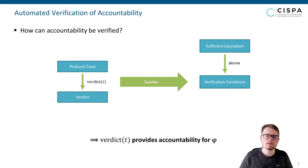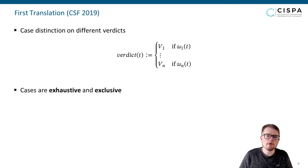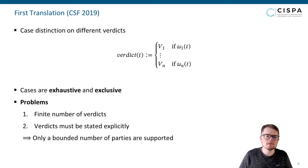Manually proving that the verification conditions are satisfied is challenging and labor intensive, so we want to automate this verification step. The idea is to translate the verification conditions to trace properties, which can then be verified by existing tools like Tamarin. Kühnemann and coworkers proposed a translation technique using verdict functions defined in terms of case distinctions on the different possible verdicts, where the omegas are trace properties specifying different situations and the v's denote the verdicts for these. The cases need to be exhaustive and exclusive. However, there are two problems: the number of case distinctions is finite and so is the number of potential verdicts, and each verdict must explicitly state which parties are to be held accountable. Verdict functions of this form can thus only handle a bounded number of parties, which is inadequate for many real-world protocols where the number of parties is not known a priori or is unbounded.